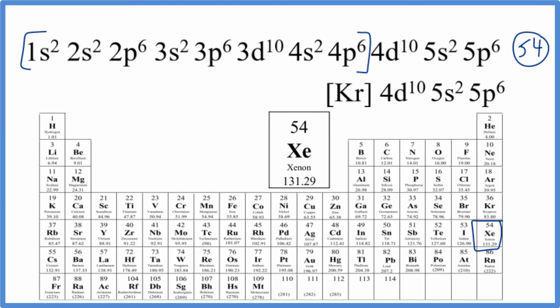This is Dr. B, figuring out which element on the periodic table here is represented by the electron configuration 1s² 2s² 2p⁶ 3s² 3p⁶ 3d¹⁰ 4s² 4p⁶ 4d¹⁰ 5s² and 5p⁶. It's xenon. Thanks for watching.